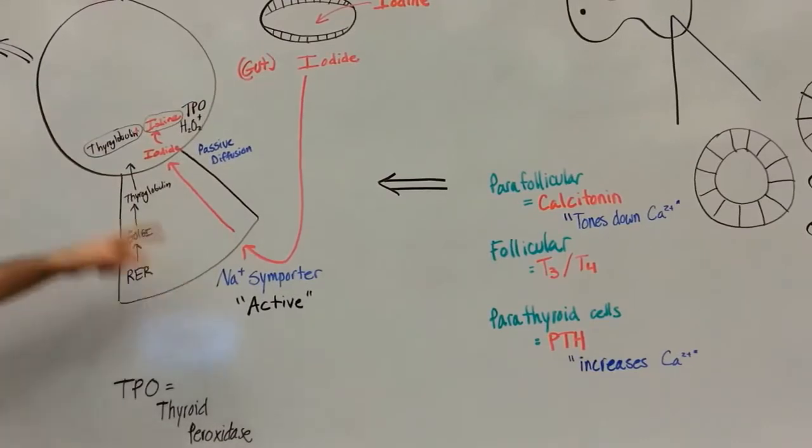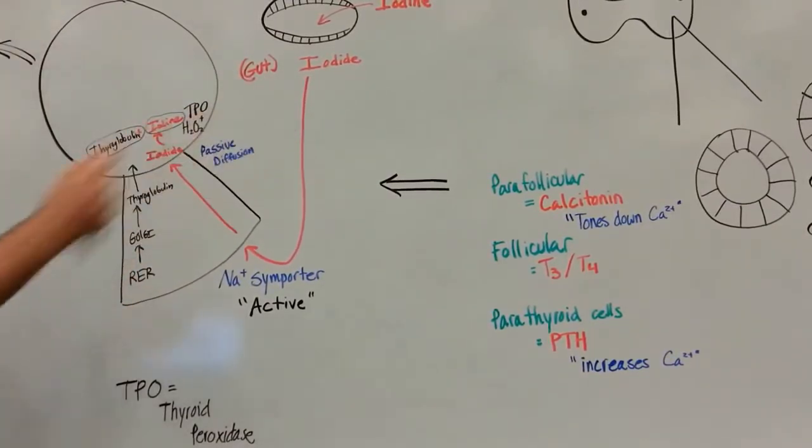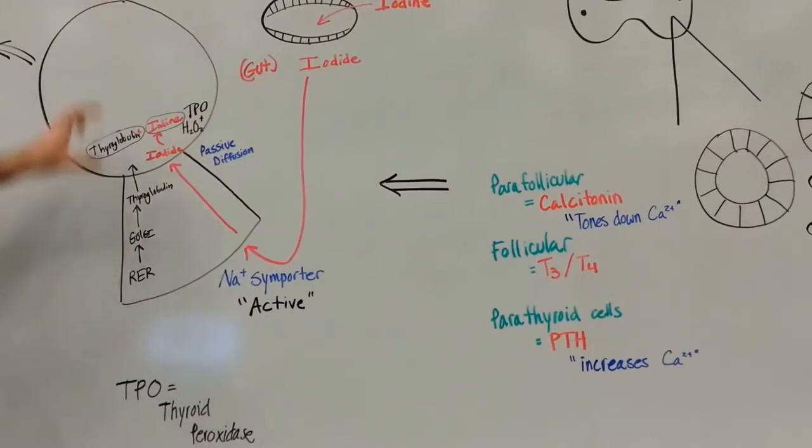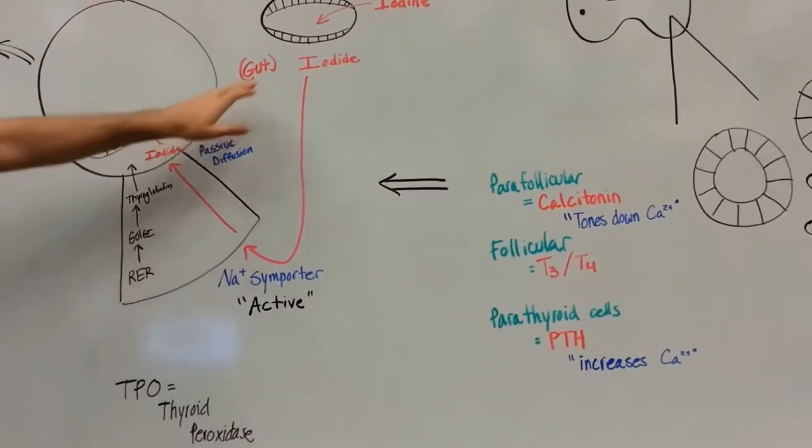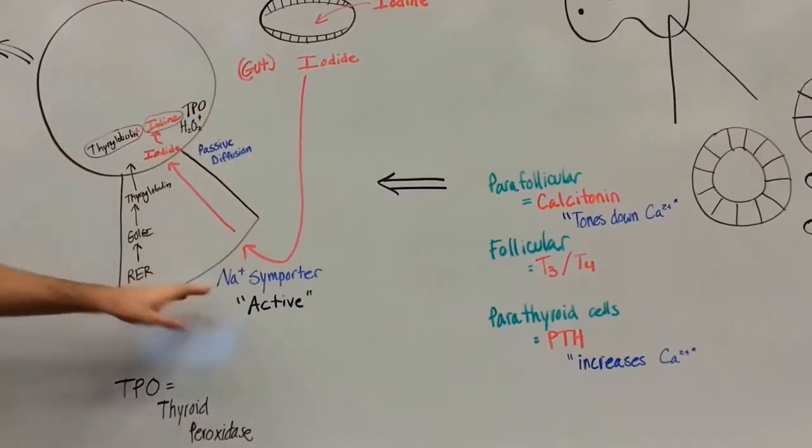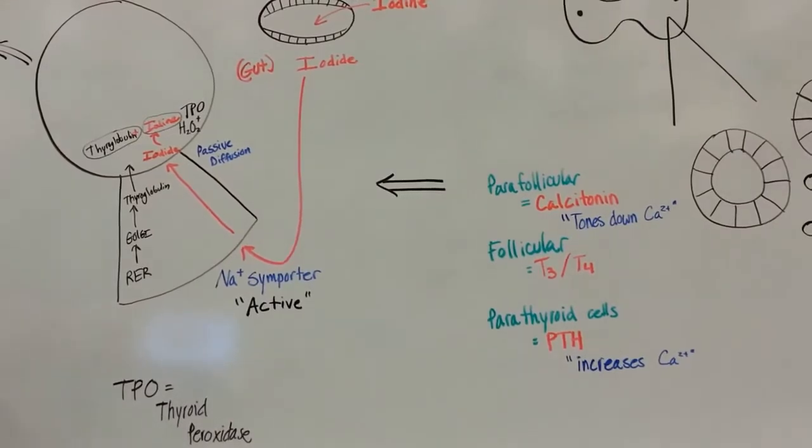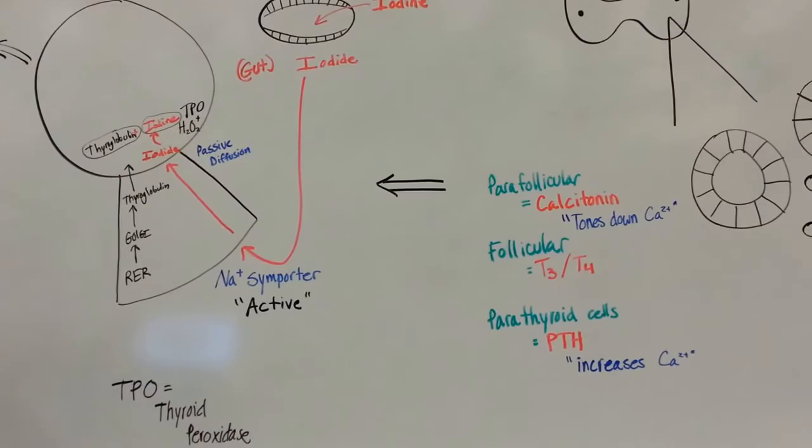That's going to go into your GI system and within your gut it's going to be converted to iodide. The iodide is going to travel to the thyroid gland. The iodide gets taken up into the follicular cell by a sodium symporter. That is going to be an active uptake, a secondary active uptake into the cell.